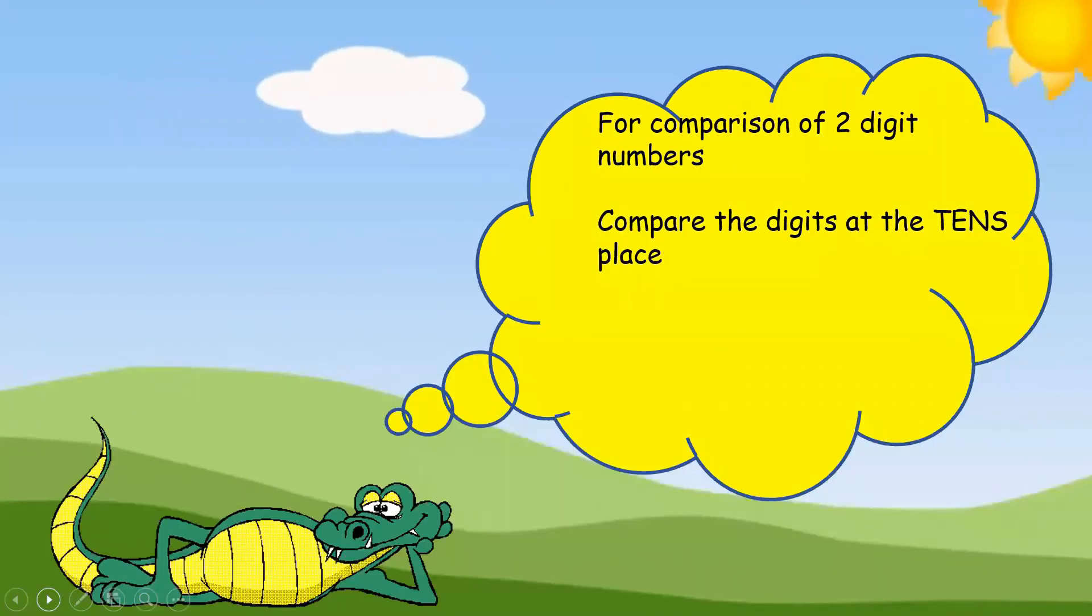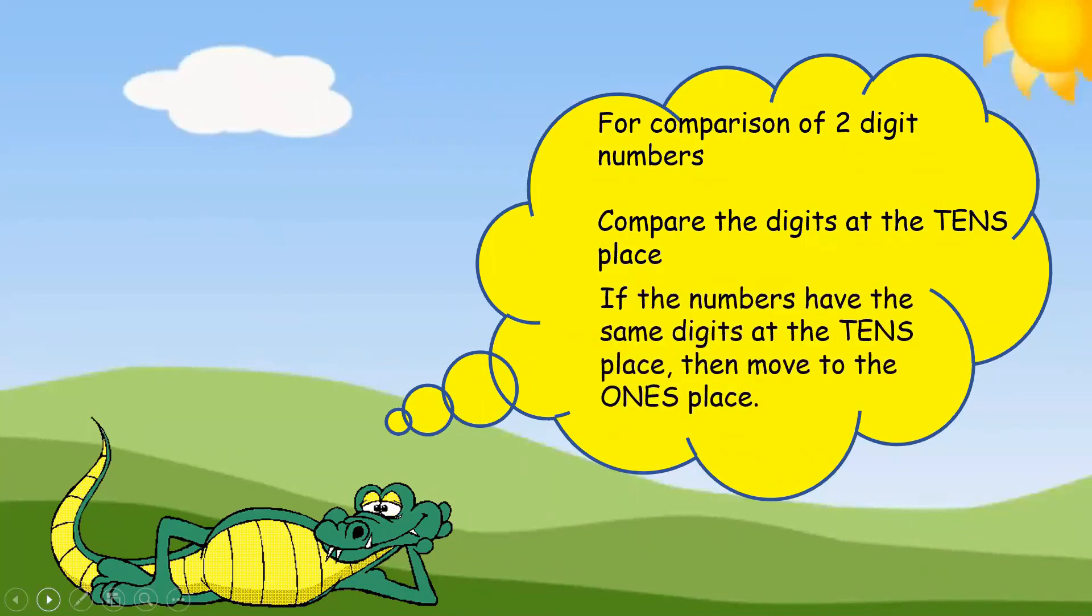Therefore, remember children, for comparison of two-digit numbers, always start comparing the digits at the tens place. If the numbers have the same digits at the tens place, then move to the ones place.